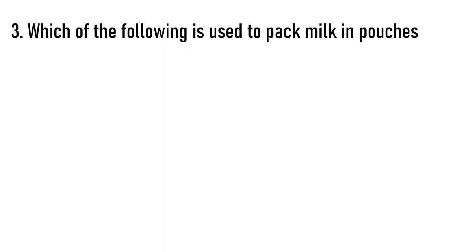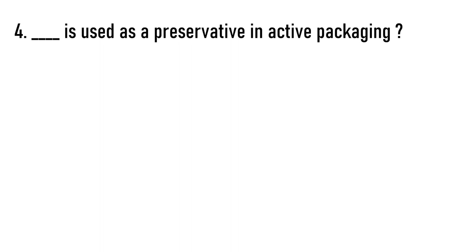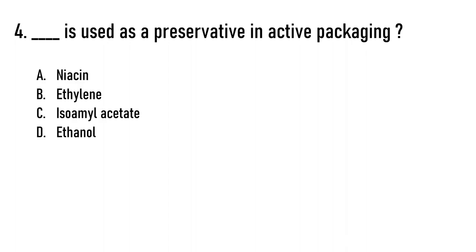Next question: Which of the following is used to pack milk in pouches? Options are polyester, polyvinyl, or PET/PE. The correct answer is option A — polyester. Next question: Dash is used as a preservative in active packaging. Options are niacin, ethylene, isoamyl acetate, or ethanol. The correct answer is option D — ethanol.